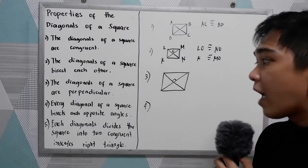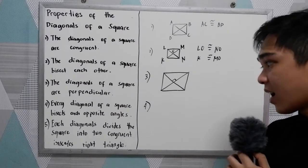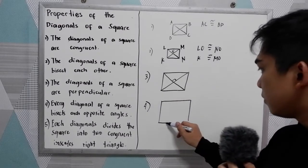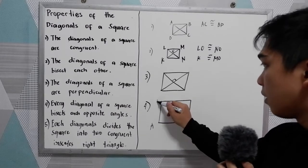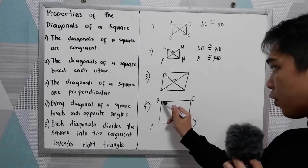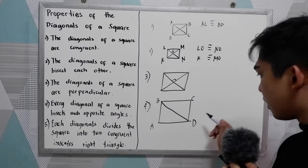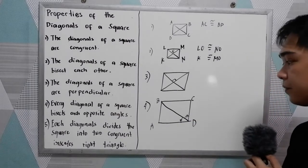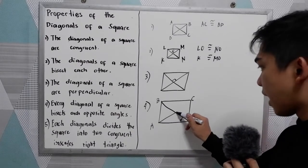Number four, every diagonal of a square bisect each opposite angle. So let's say we have square A, B, C, D. If we're going to draw our diagonal, therefore this angle is equal to the other angle. The same as if we have diagonal AC, this angle is equal to the other angle.